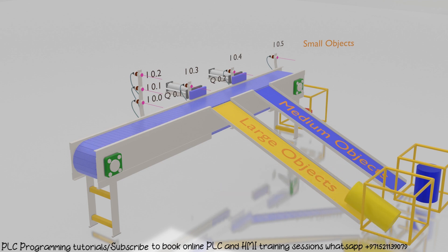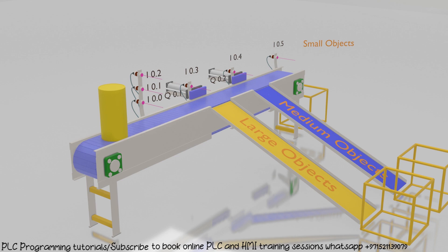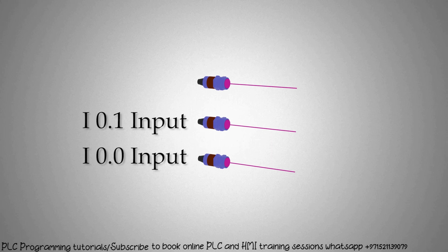You can see that we have installed three sensors at the entrance of the conveyor to detect small, medium, and large size objects. The bottom sensor is connected at I0.0, the middle sensor is connected at I0.1, and the upper sensor is connected at I0.2 input of the PLC.